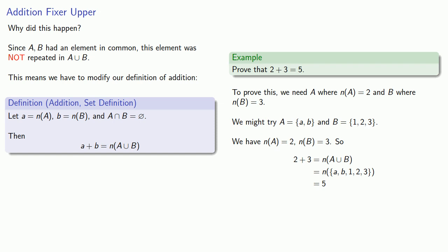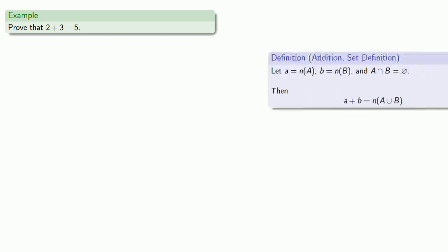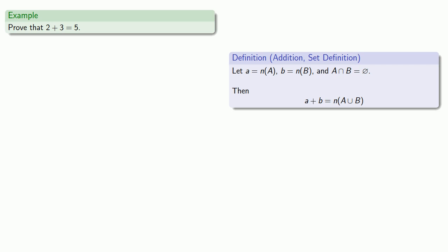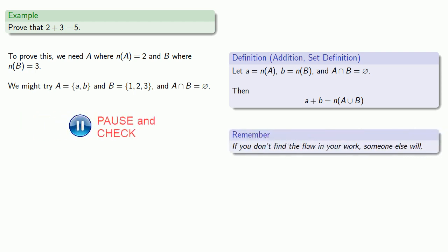Because we changed our definition of addition, we should re-examine our earlier proof. We still want to prove two plus three equals five, this time using our corrected definition. We still need to find two sets A and B with cardinalities two and three. This time we do have to make the additional check that their intersection is the empty set — and because it's part of the definition, we can claim it without comment, though you should verify it is correct. Looking at the two sets, A intersect B does appear to be the empty set, and so two plus three is the cardinality of the union, which is five.